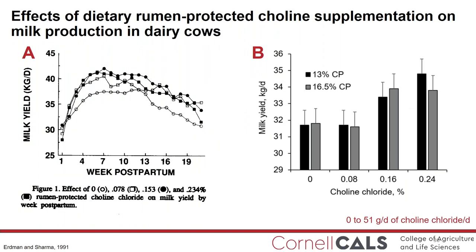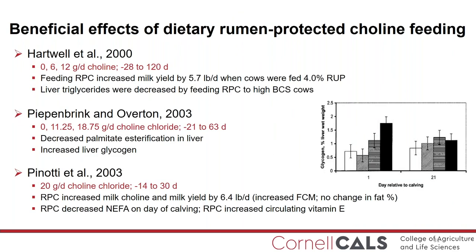An original study of 48 early-lactation Holstein cows by Erdman and Sharma fed rumen-protected choline from 0 to 0.234% of ration dry matter, which equated to 0 to 51 grams per day of choline chloride. The main finding was a tendency for increased milk yield without a change in dry matter intake. In a separate study, they were able to show that rumen-protected choline feeding increased milk yield across different crude protein diets. This early study led to a series of many other studies over the past three decades evaluating rumen-protected choline feeding.